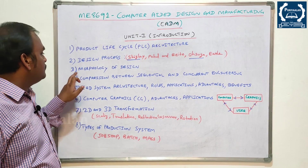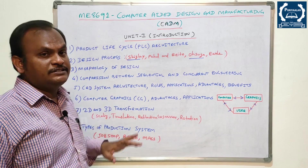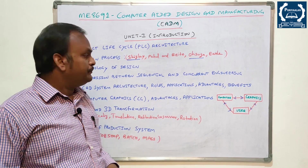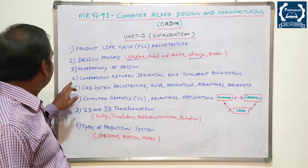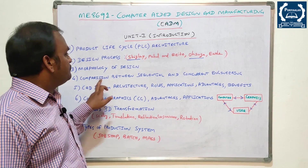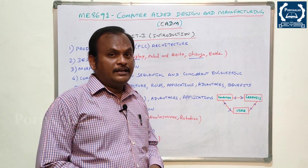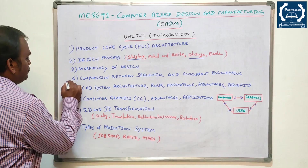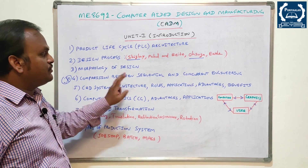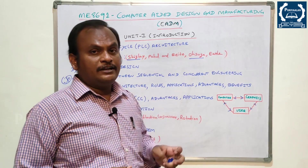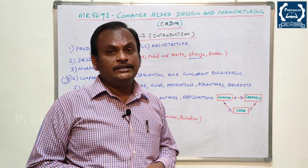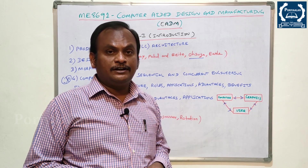The third one is Morphology of Design — what is the morphology of design? This is an 8-mark question. The fourth question is Comparison between Sequential and Concurrent Engineering. This is very important. Sequential and Concurrent Engineering is worth two marks — the two marks will define Sequential and Concurrent Engineering.